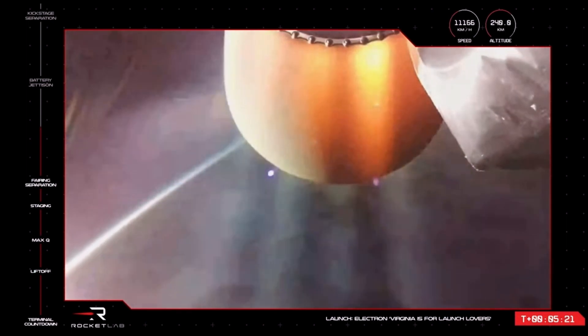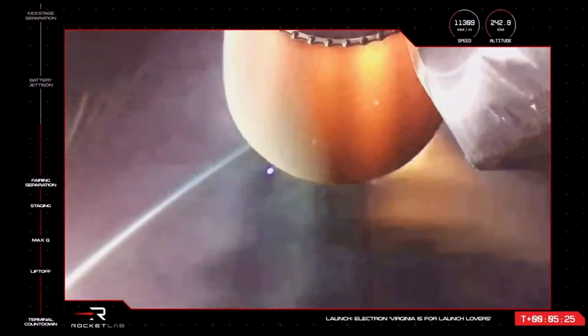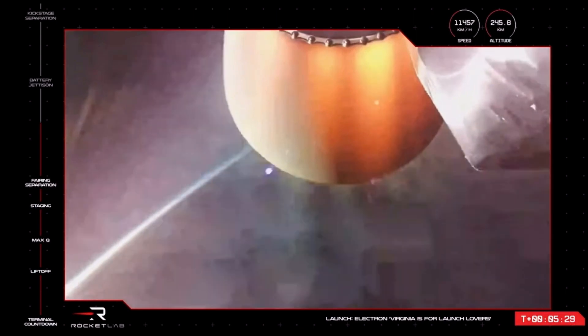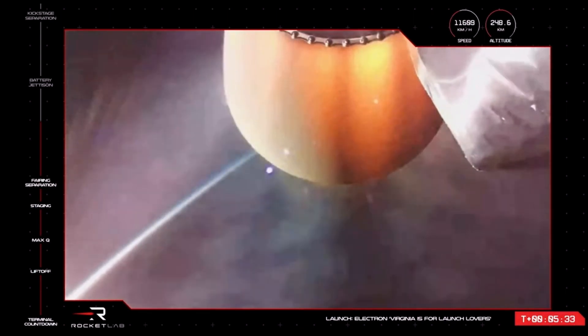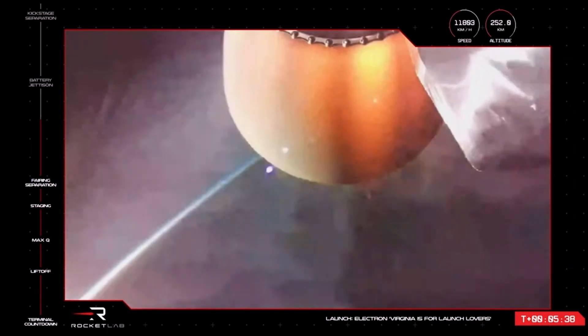But since it's shed its first stage that stored the majority of the mission's propellant, along with 9 of those Rutherford engines, Electron is down to one-fifth of its liftoff mass, enabling that second stage engine to propel Electron past 11,000 kilometers an hour.